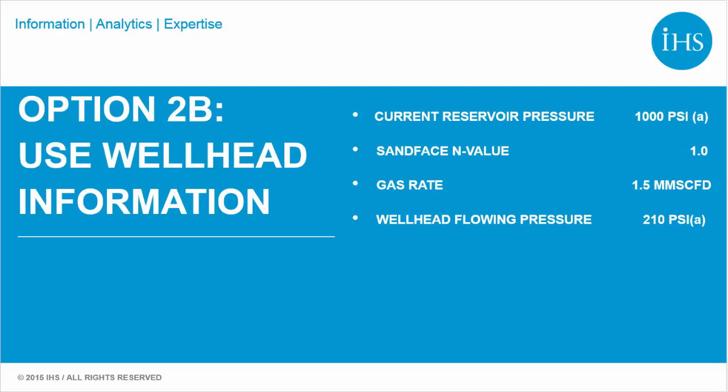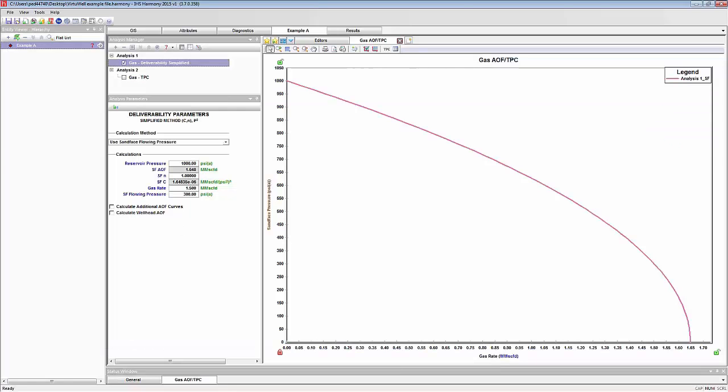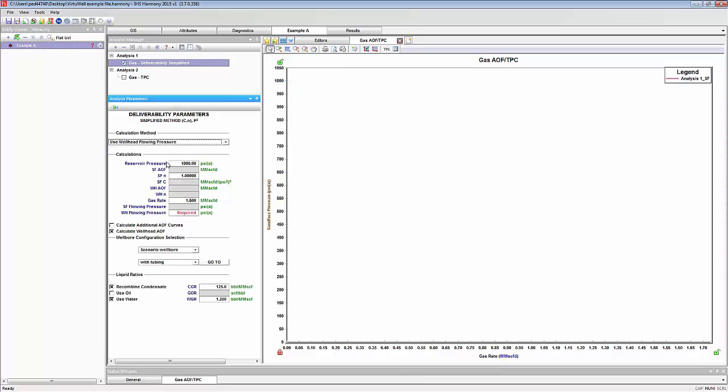Method 2B is to use well head flowing pressure. With this method, we need to have a wellbore in order to calculate pressure at the sand phase. Here is the data we are going to enter, and here is the wellbore information. Again, use the dropdown and select use well head flowing pressure. Enter the data as required. Since this method requires a wellbore, it will automatically turn on the calculate well head AOF option, seen here and here.